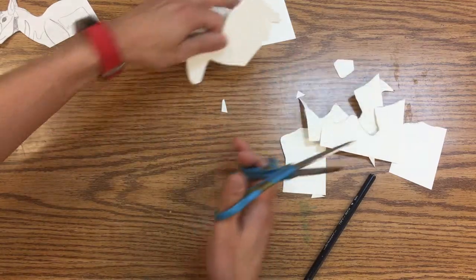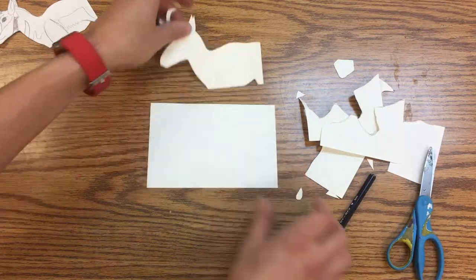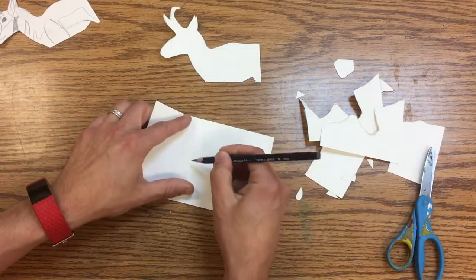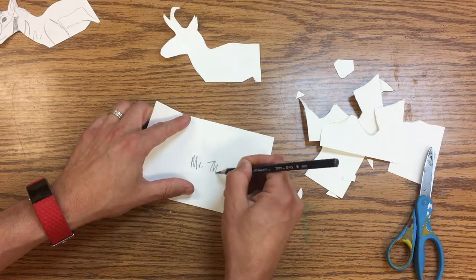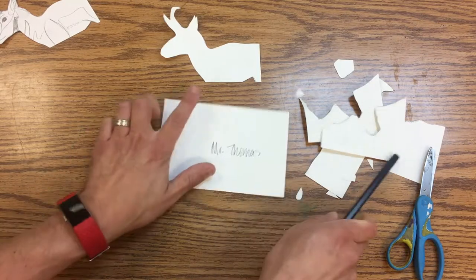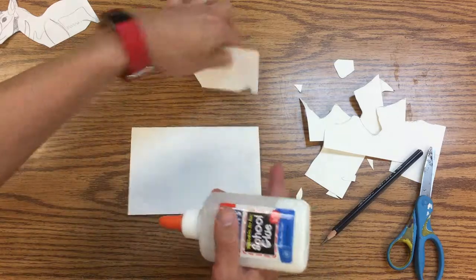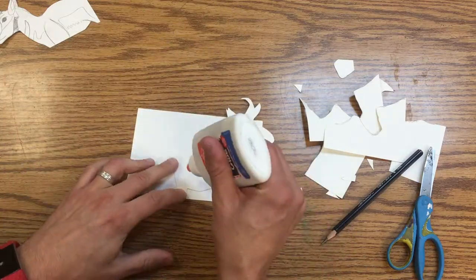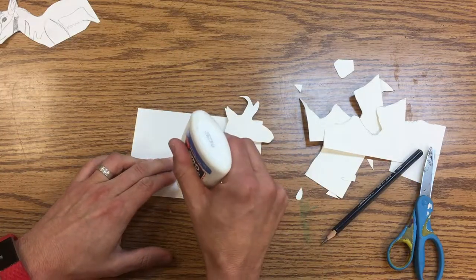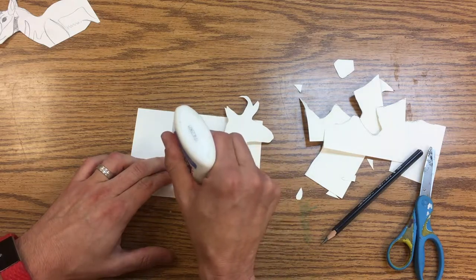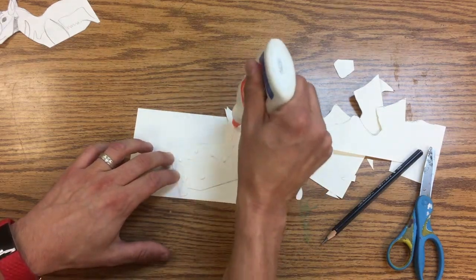Now I'm going to take this, make sure my name is on this, and I'm going to glue the silhouette to the big rectangle using ladybug dots.